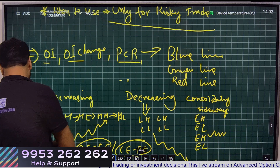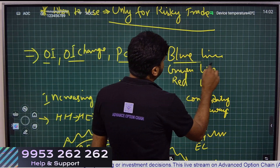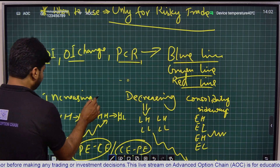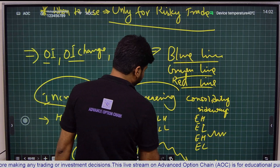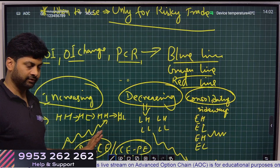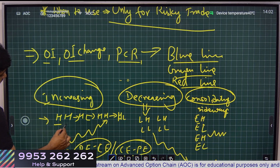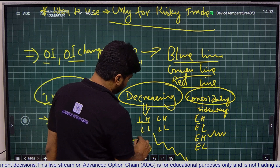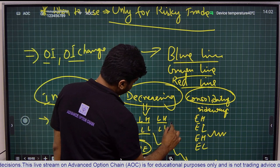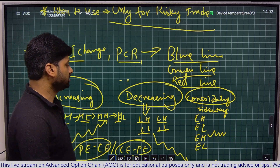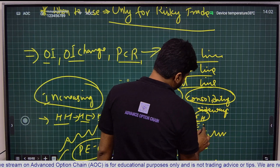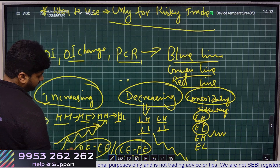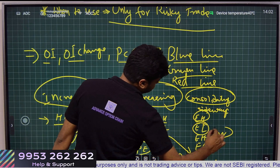One simple rule we need to remember: there are three lines — red, green, and blue. Lines can be increasing, decreasing, or consolidating. Increasing means it is forming higher high, higher low. Decreasing means it is forming lower high, lower low. Consolidation means it is forming equal highs and lower lows. The graph would look like increasing, decreasing, or consolidating.